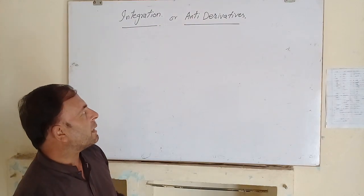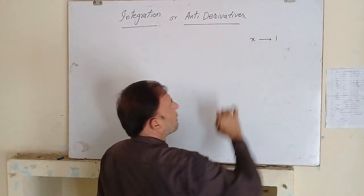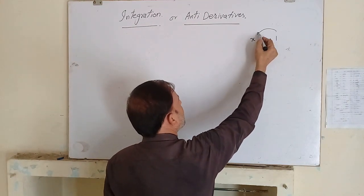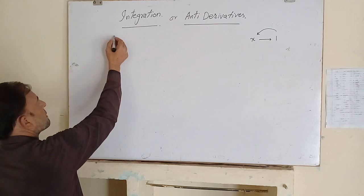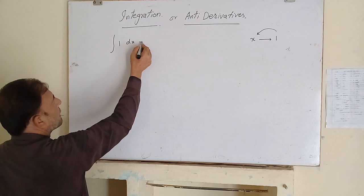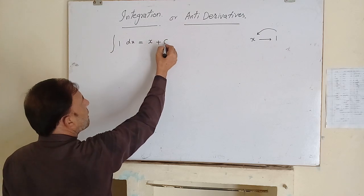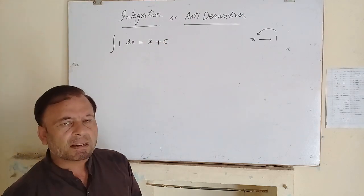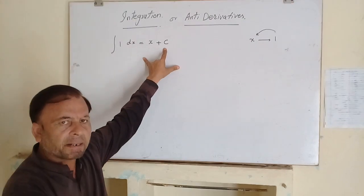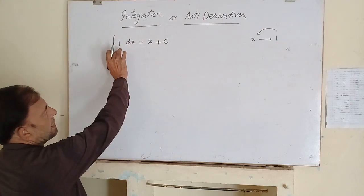We have a formula that the derivative of x is equal to 1. It means the integration of 1 should be x. The integration of 1 dx is equal to x plus c. Here, c is called the constant of integration. I will explain why c always appears in integration at the end of this lecture.